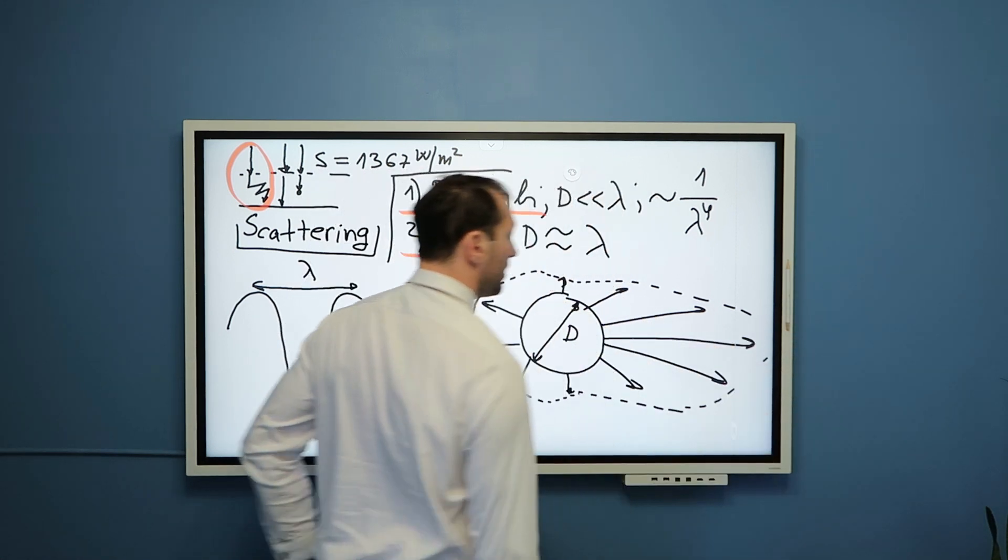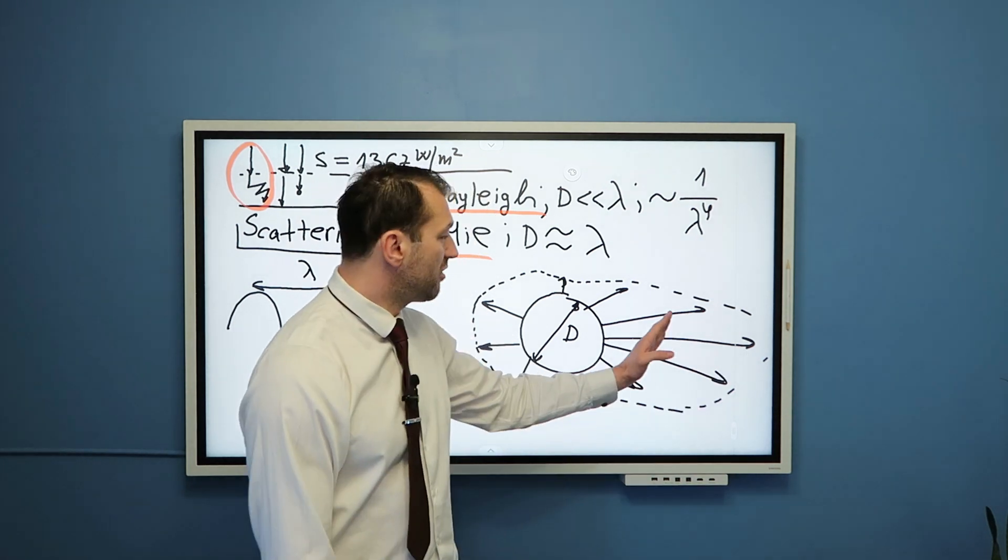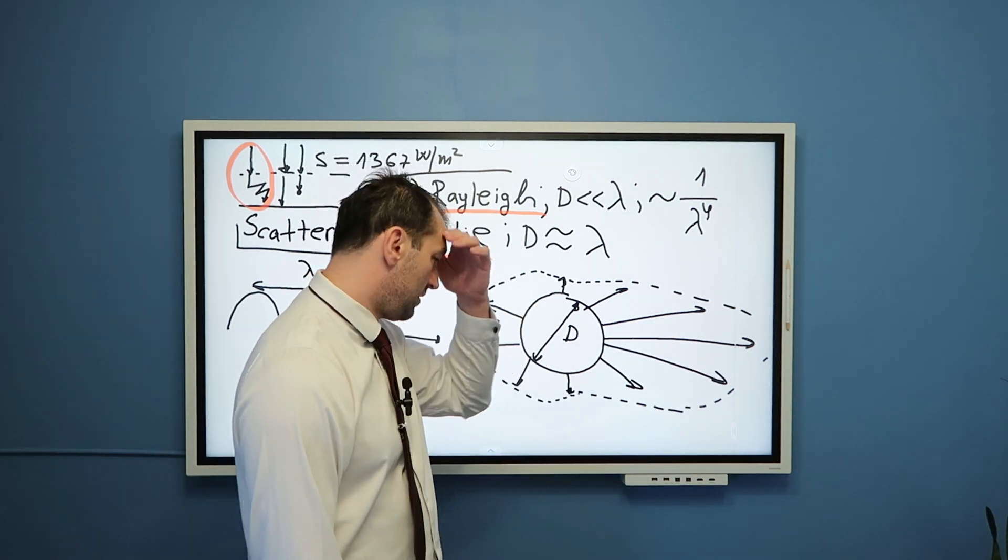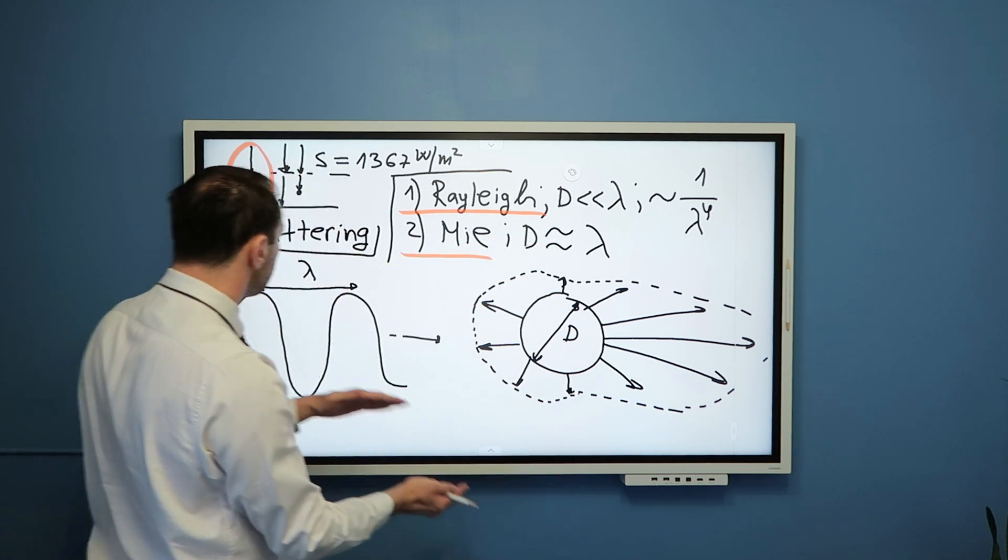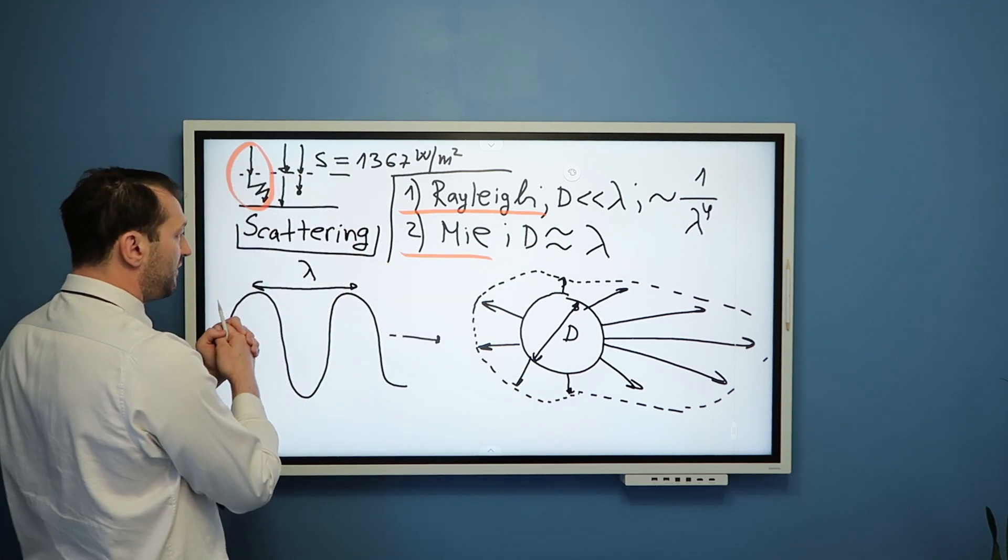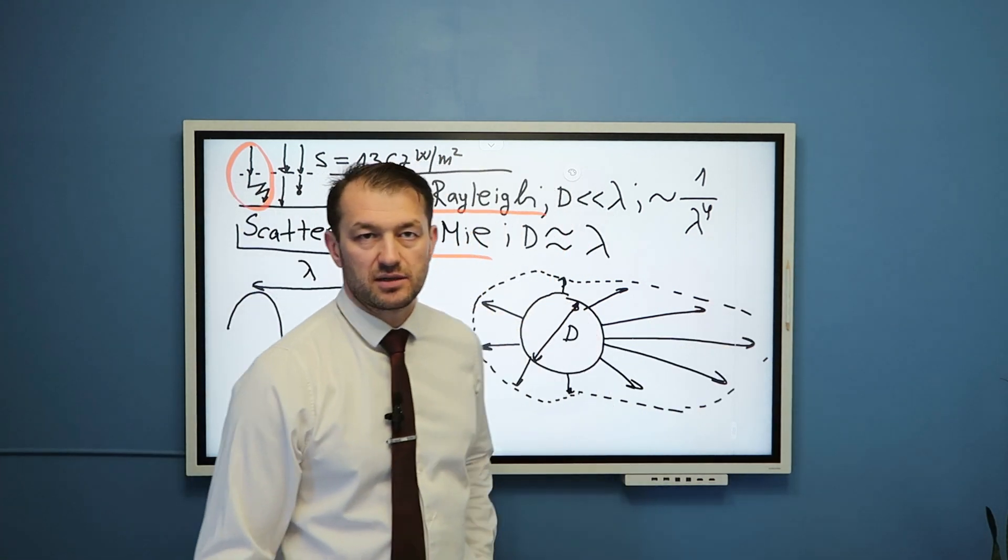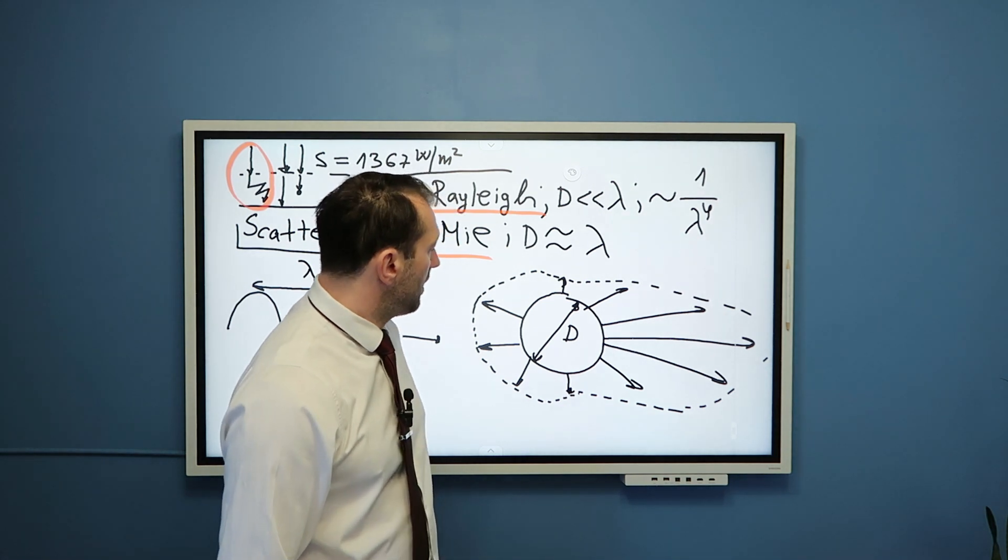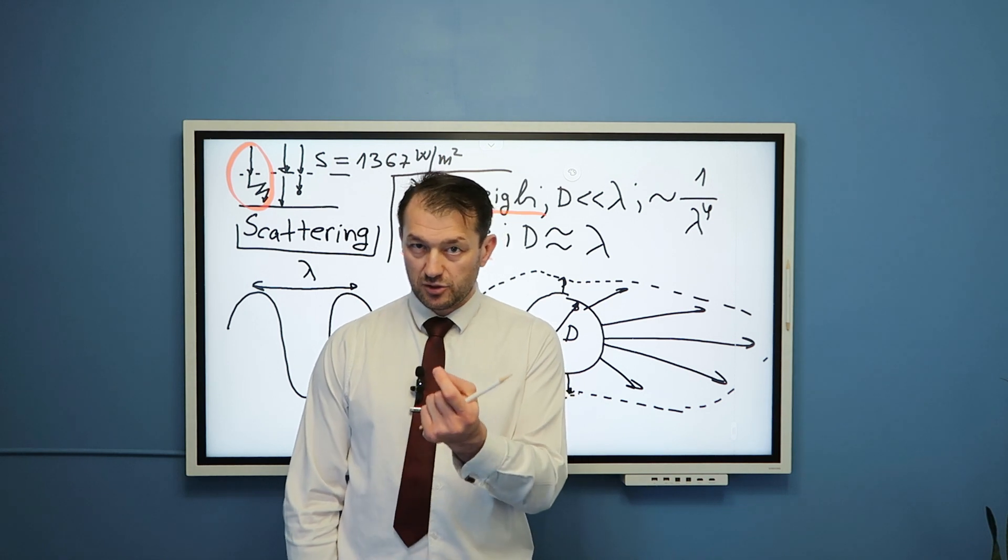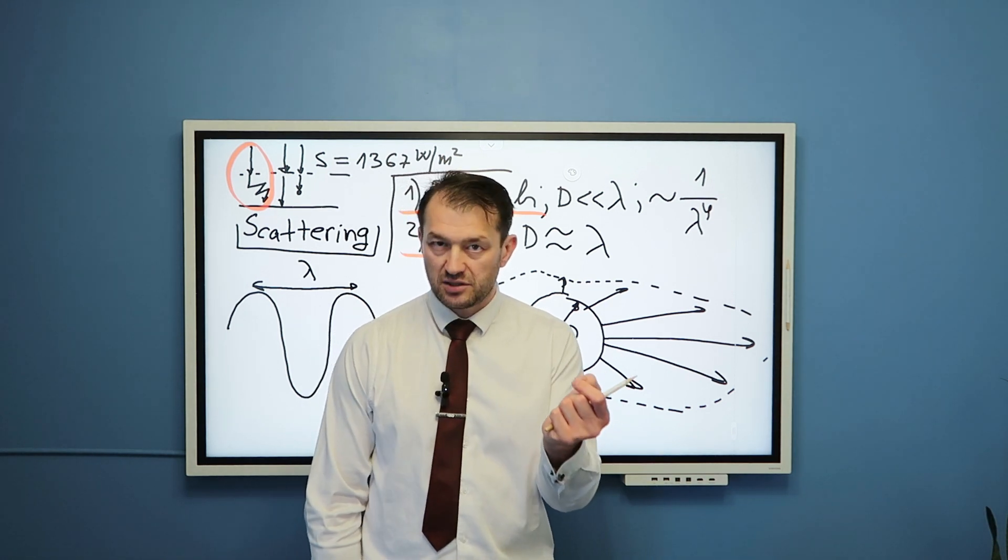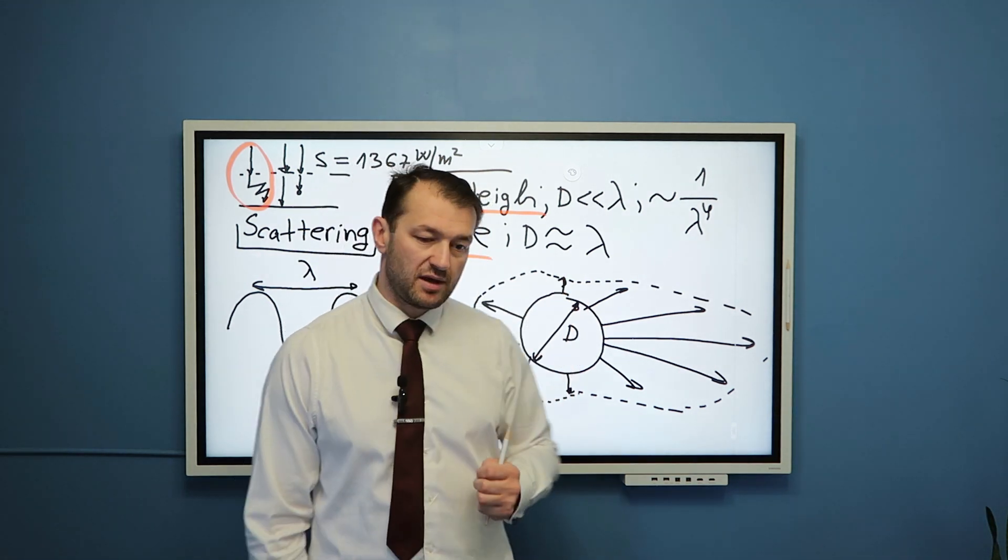So, in Mie scattering, forward dominates all other directions. As the size of this particle increases with respect to the wavelength of this light, forward scattering keeps increasing as well. So, Mie scattering is very important when we have small particles of dust, dirt, or anything else in the atmosphere because these particles predominantly scatter in the regime of Mie scattering.